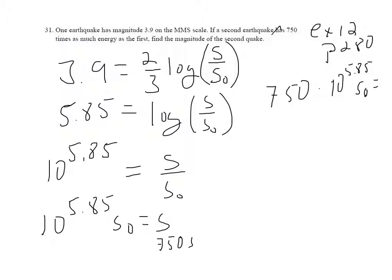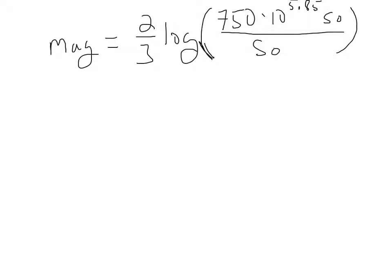Now we can just drop that into the formula. We just drop that into the magnitude formula. The S sub 0s cancel out. That leaves me 2 thirds log of 750 times 10 to the 5.8 over 1. I guess I didn't need to write it like a fraction.